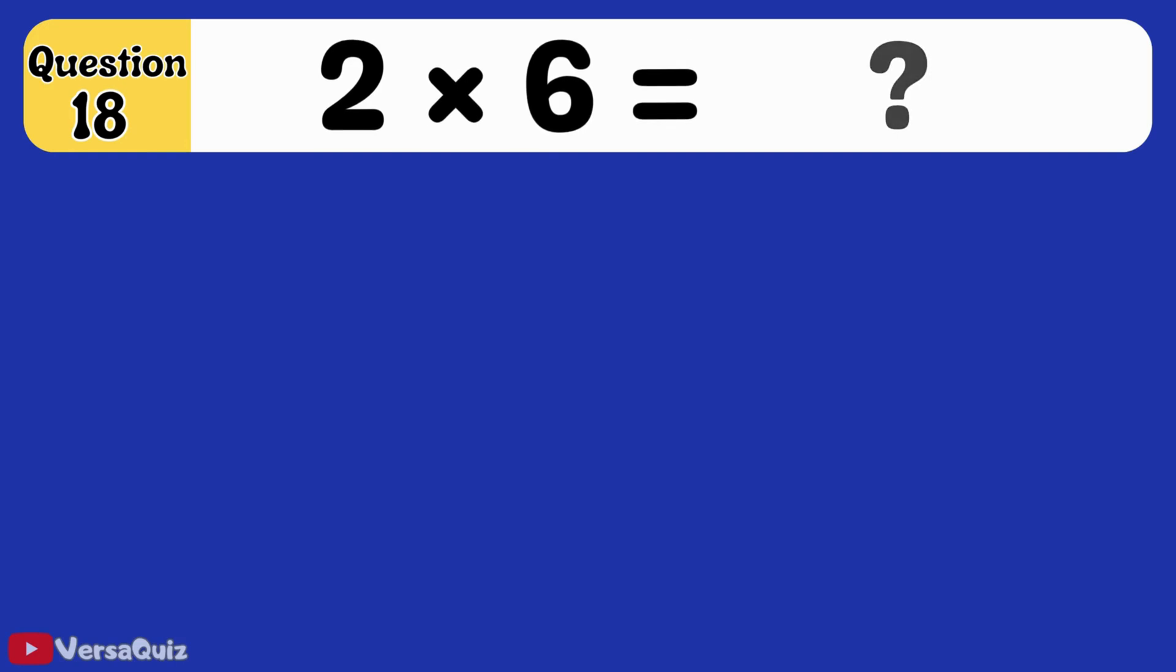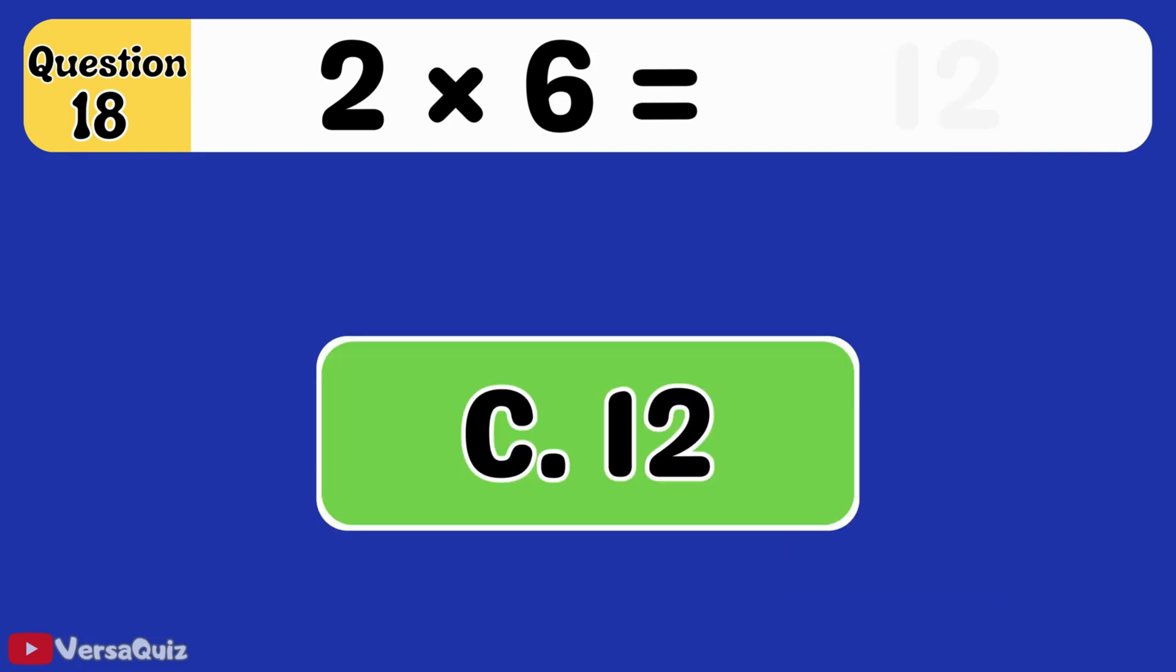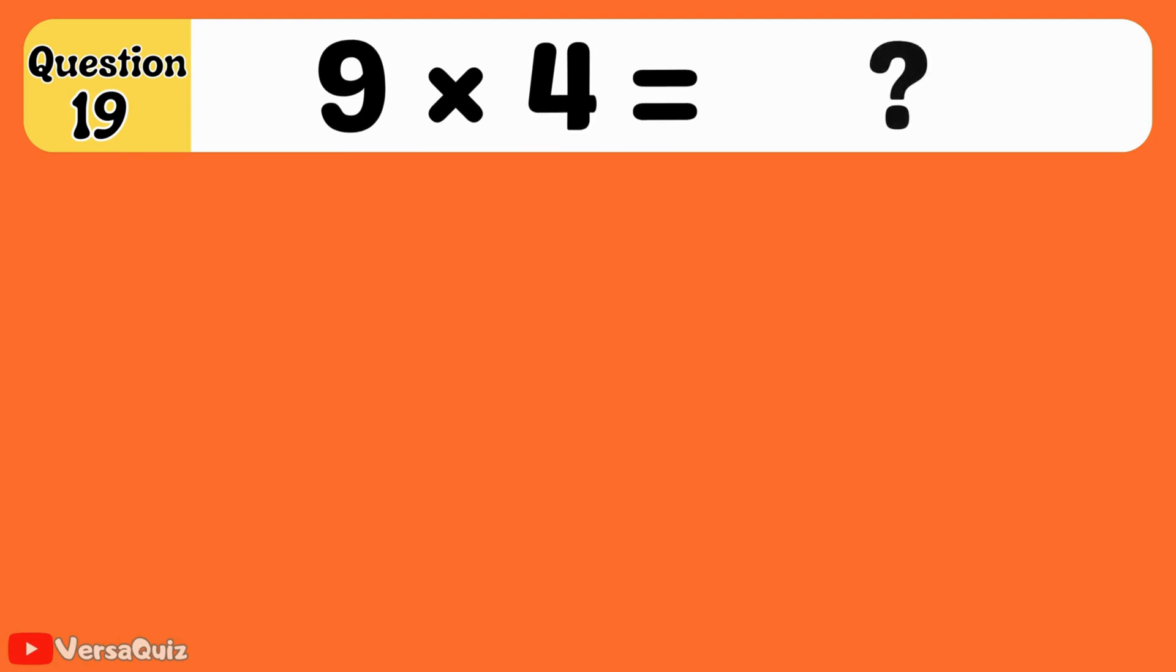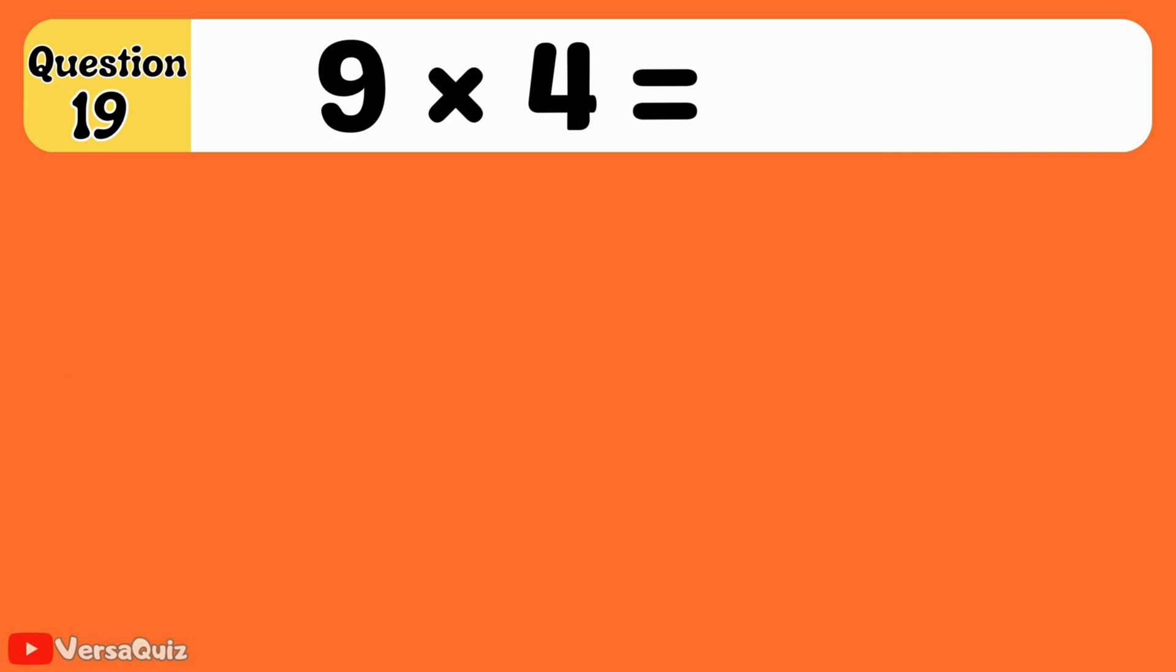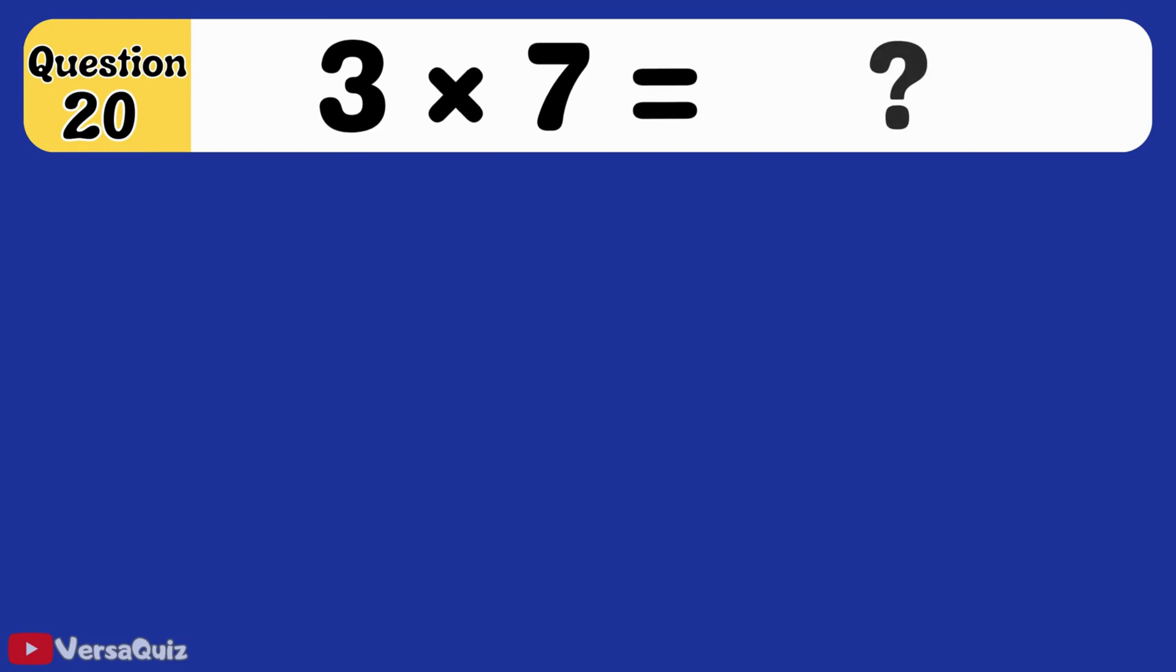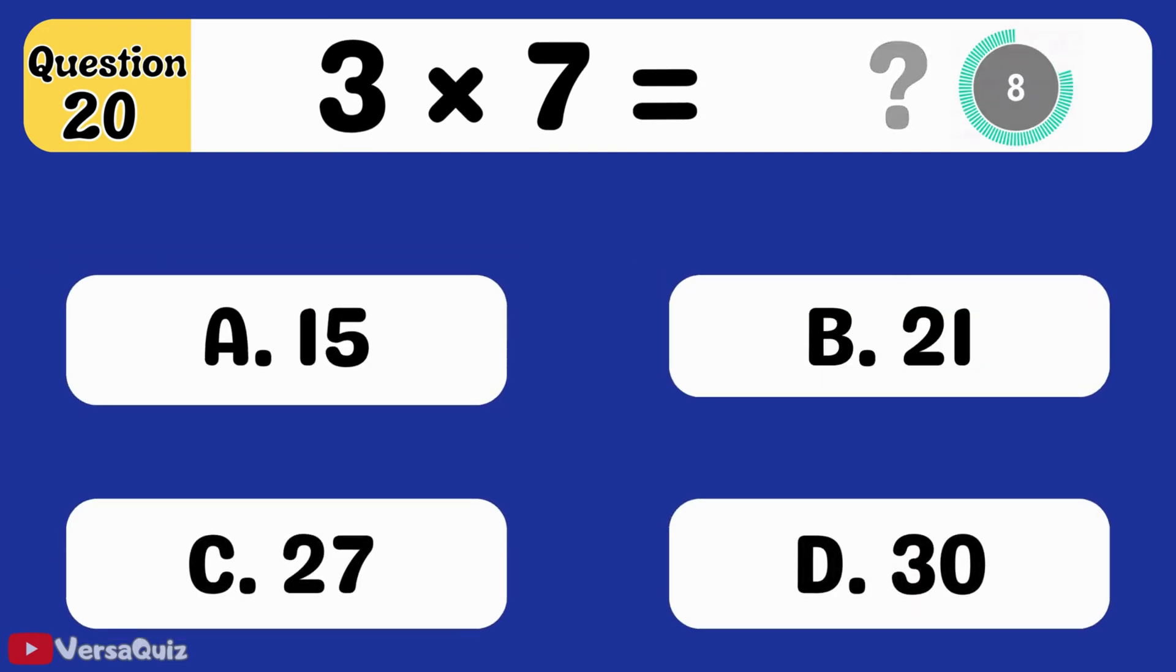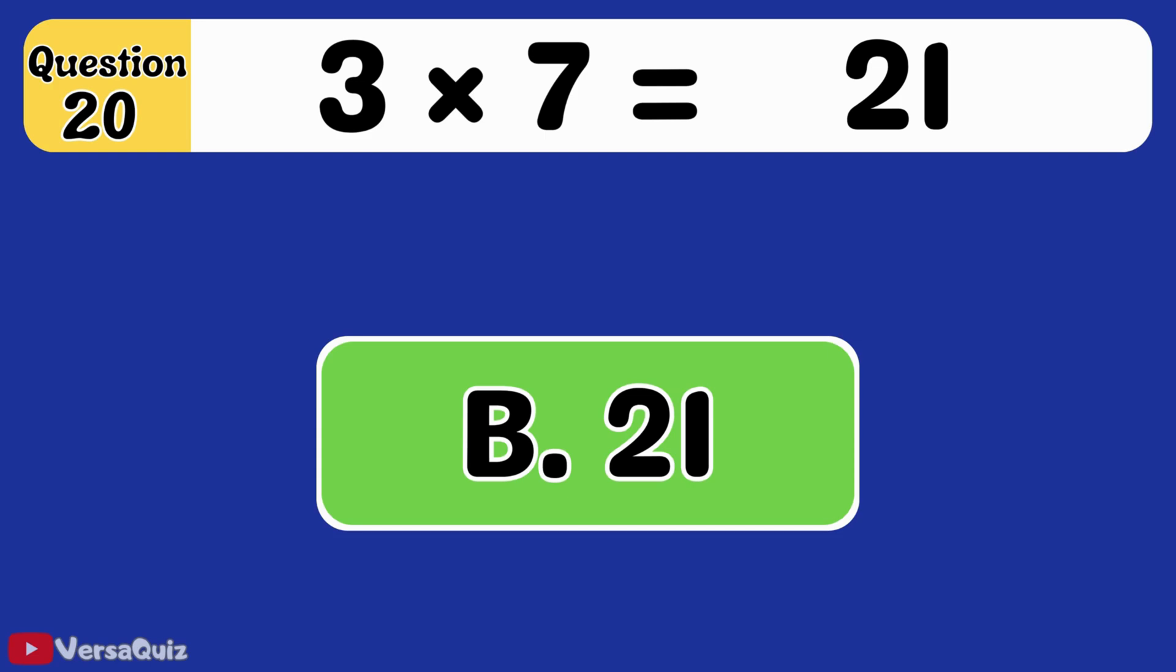2 times 6 is equal to... 12. 2 times 6 equals 12. 9 times 4 is equal to... 36. 9 times 4 equals 36. 3 times 7 is equal to... 21. 3 times 7 equals 21.